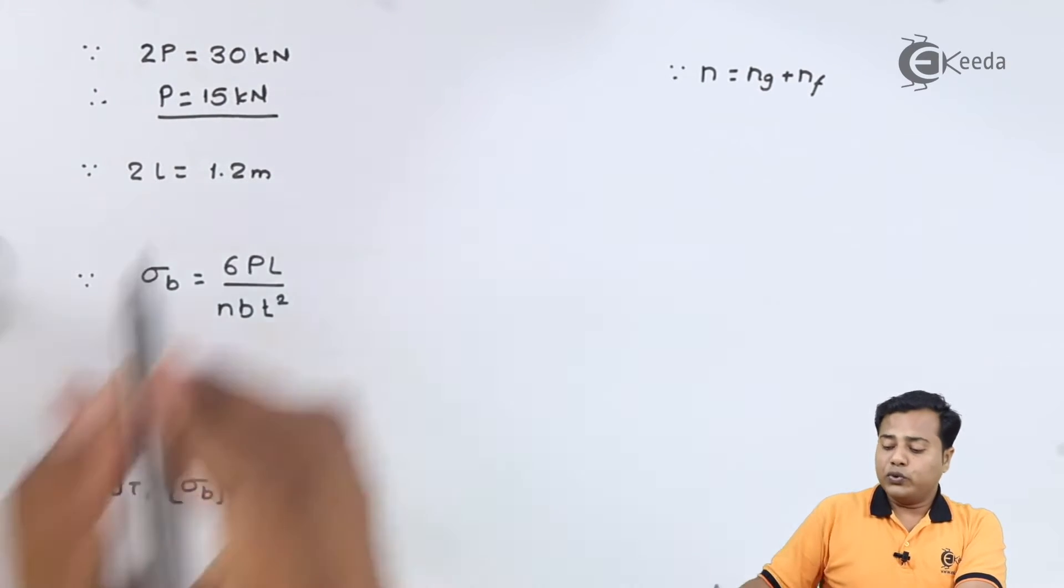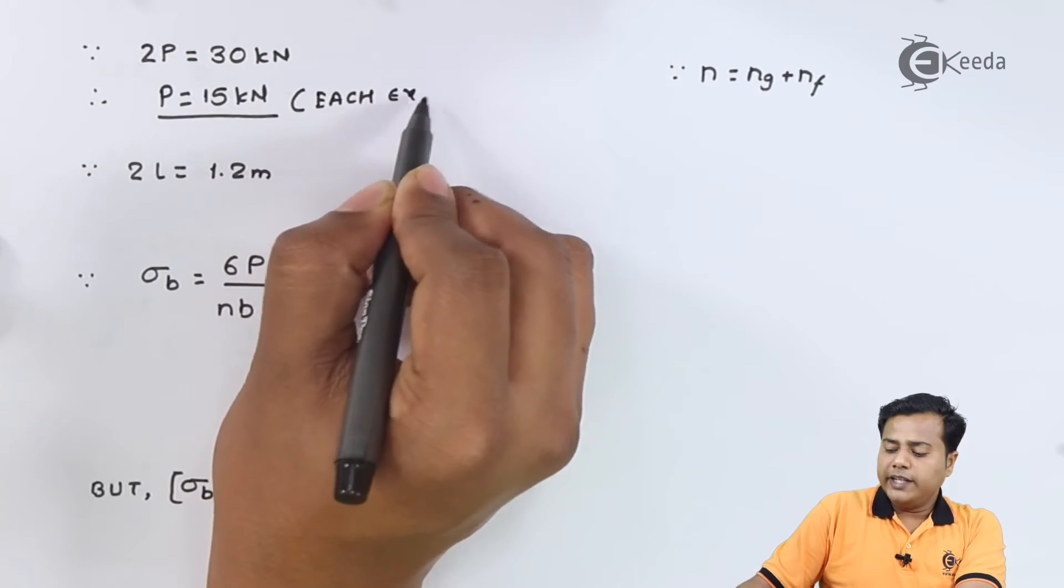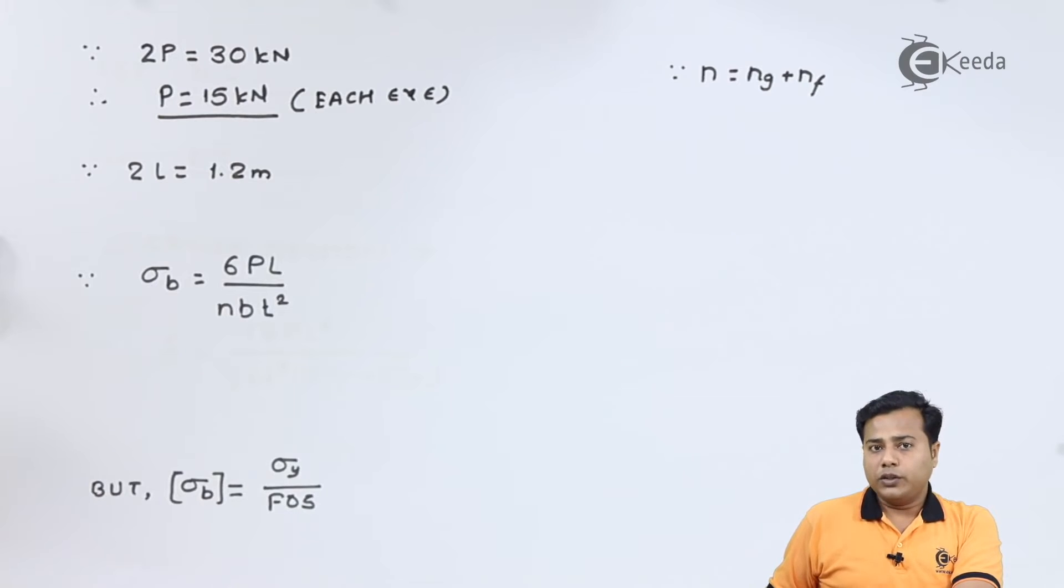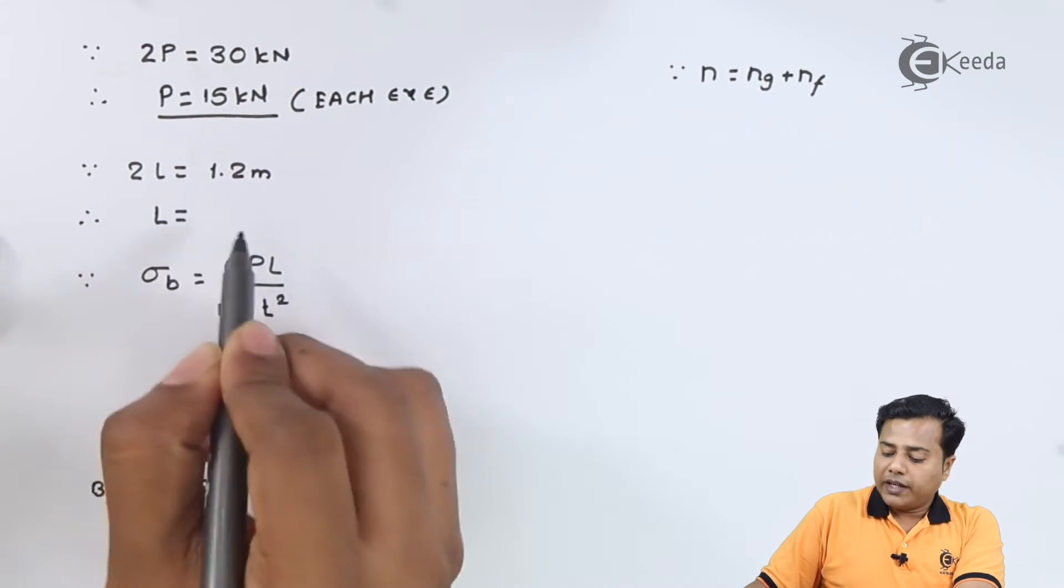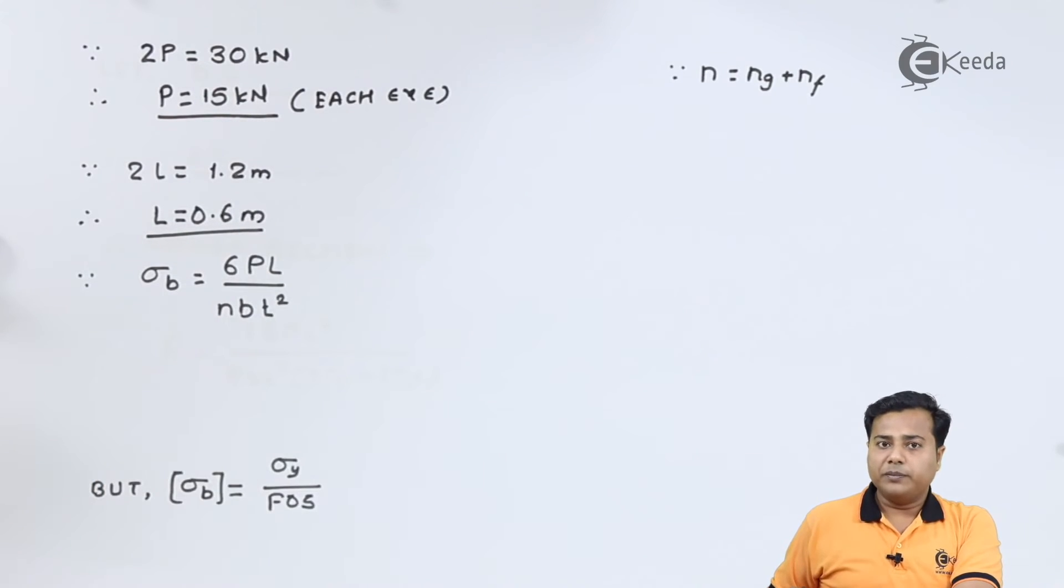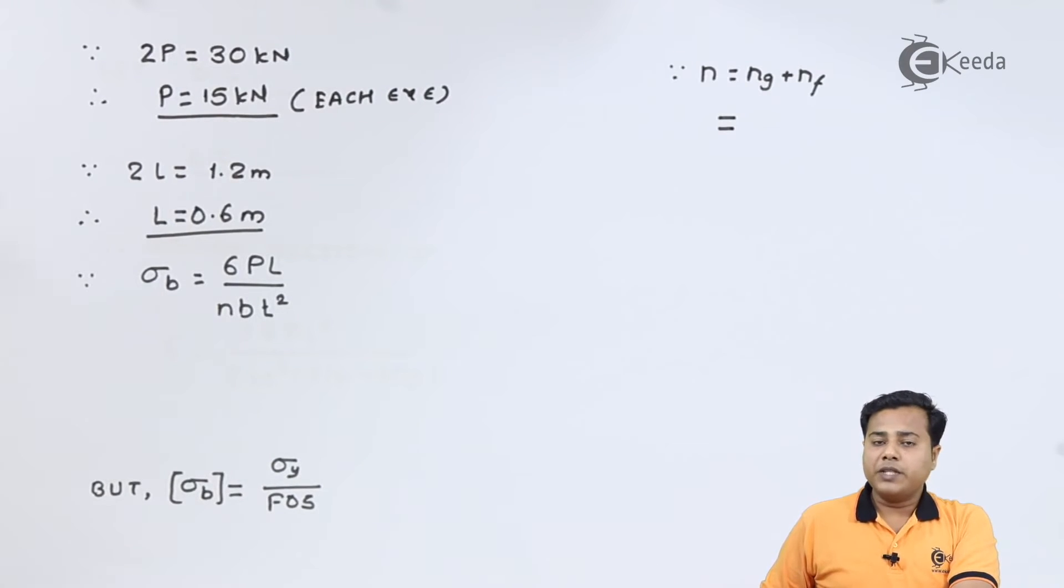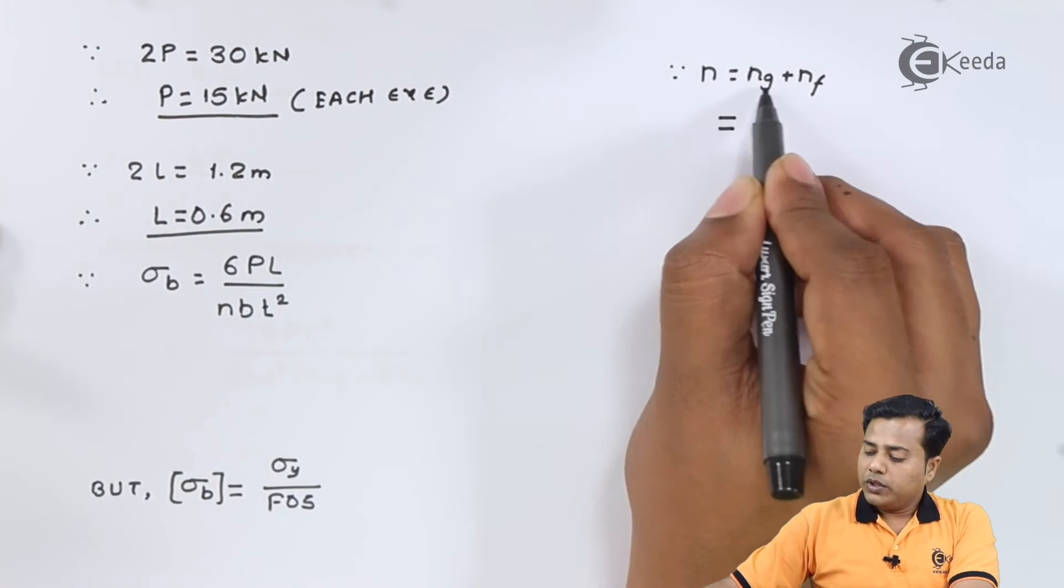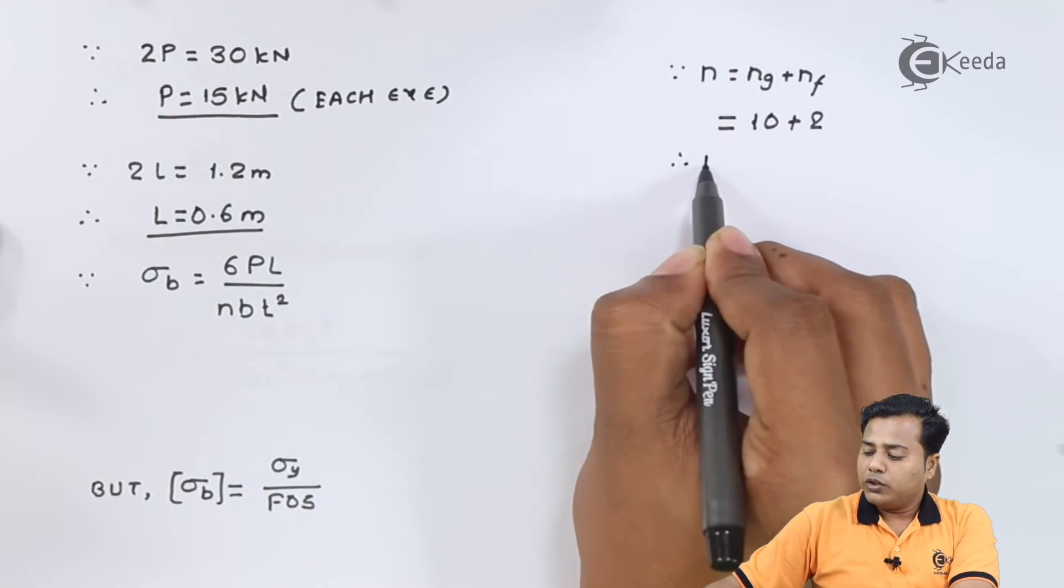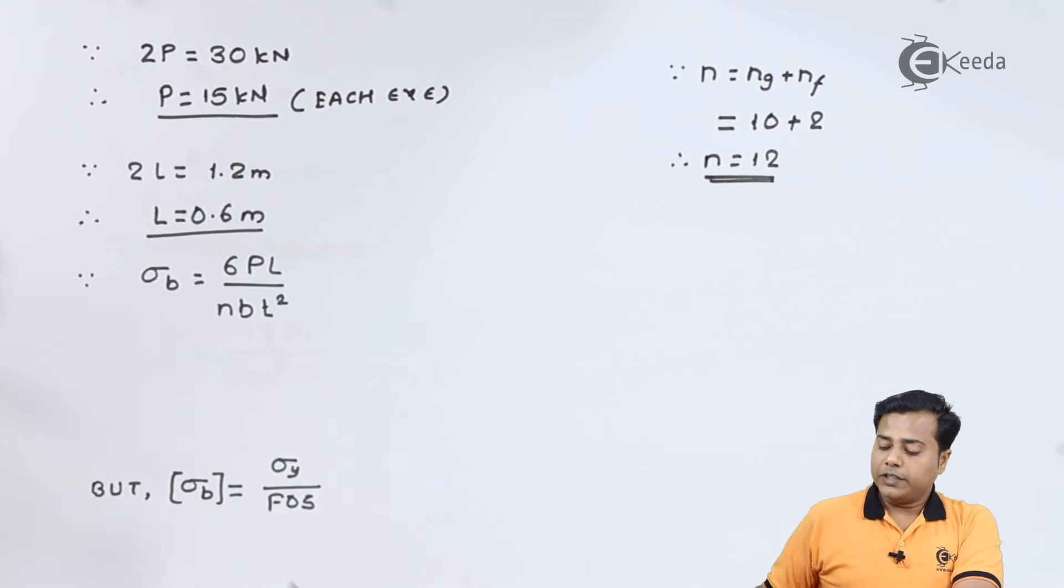This is the amount of force that is going to act on each eye. Further we have been given center to center length and therefore L factor becomes 0.6 meter. We also have been given the number of graduated leaves and full length leaves. So graduated are 10 and full length are 2 and therefore total number becomes 12. With this factor let's proceed.